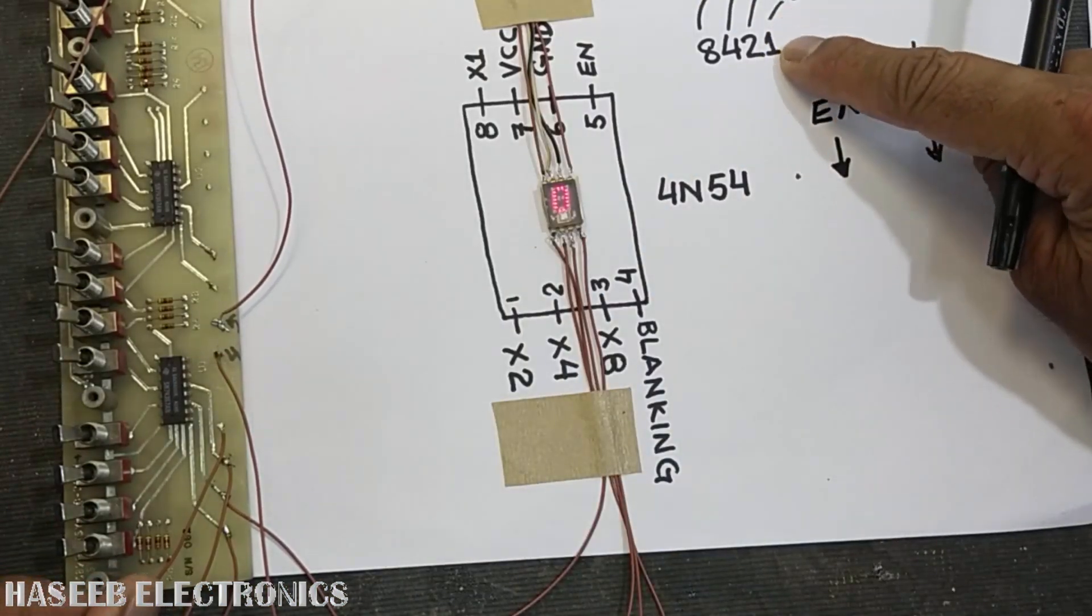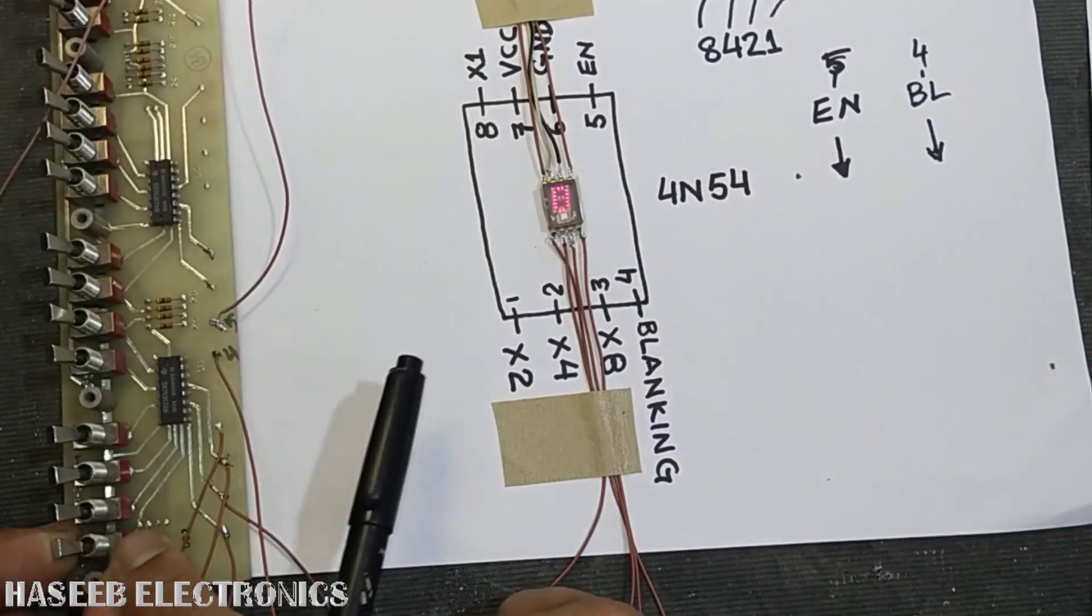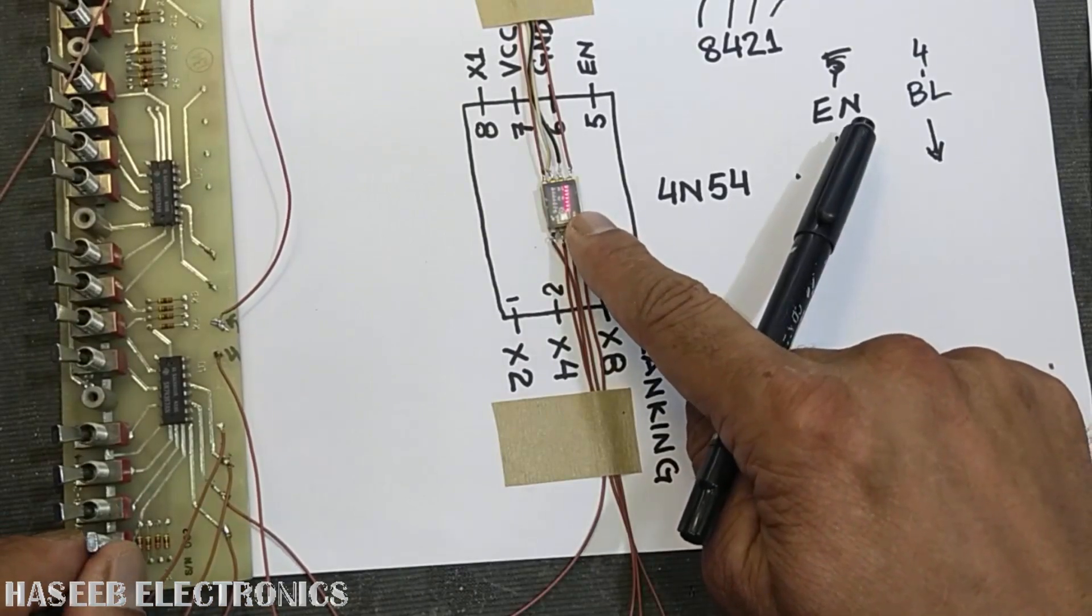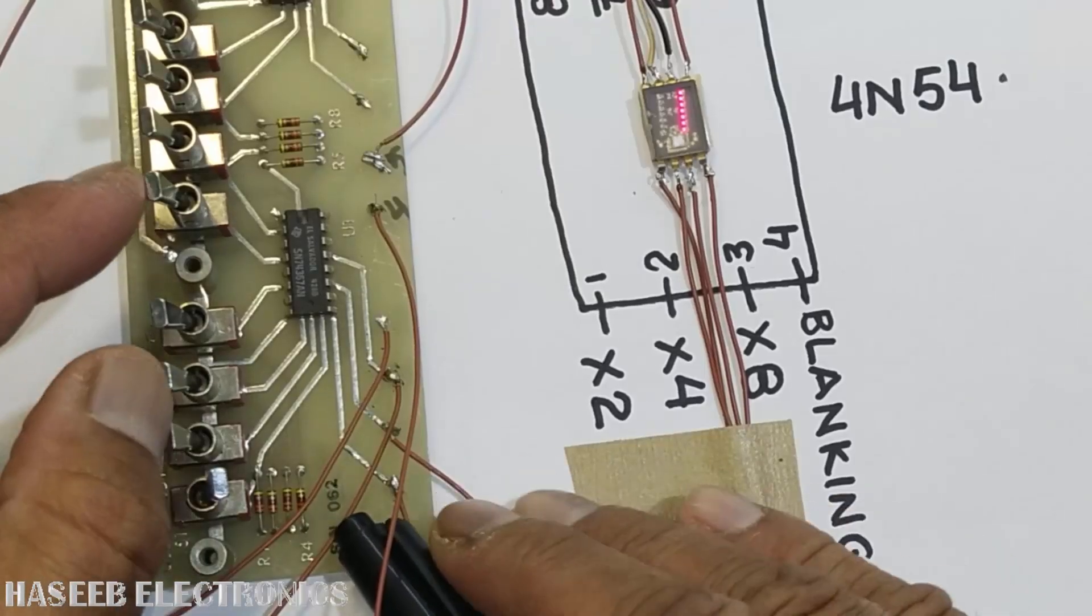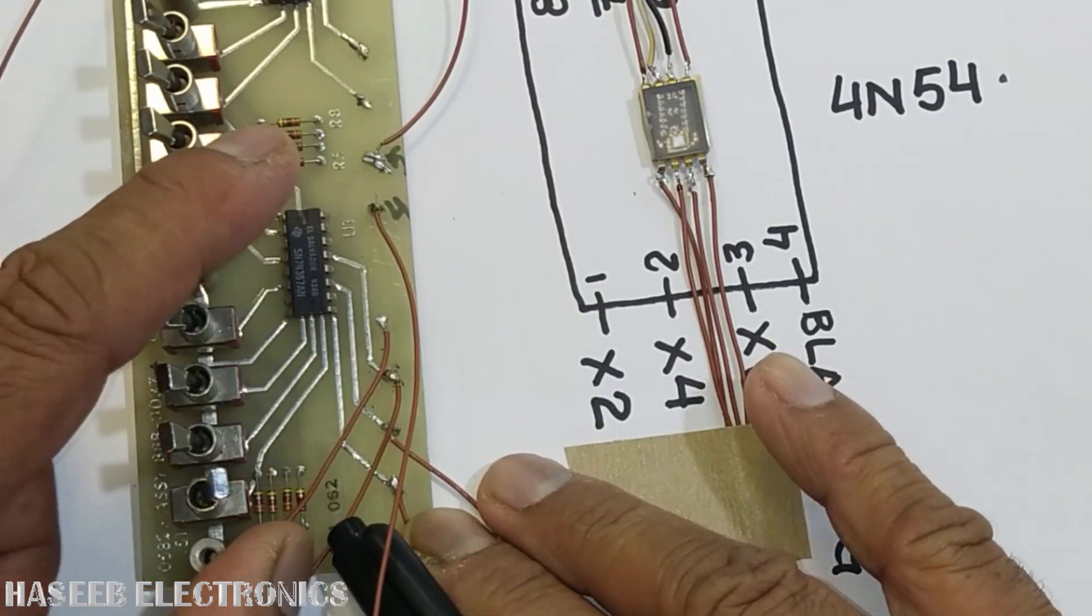When we turn on the LSB on pin number 1, the first bit high, that is pin number 8, so the first bit is this one, so it will turn on the data in the display. Now, anytime if the blanking pin is on, the display will turn off.